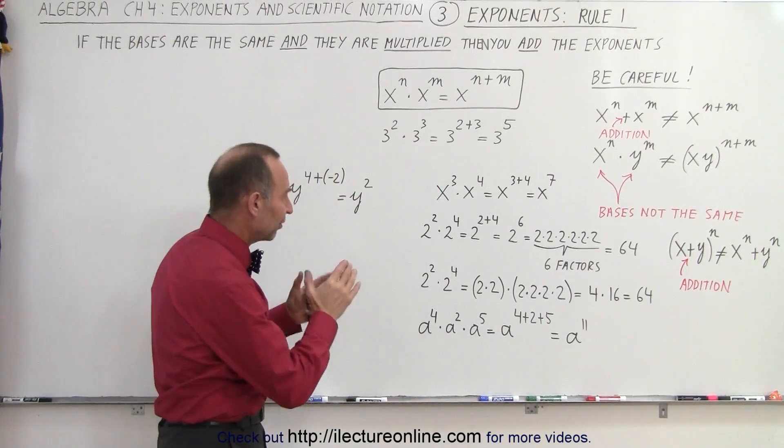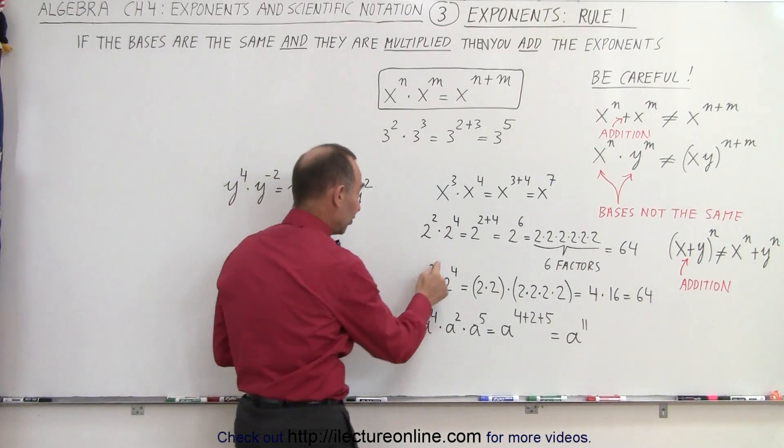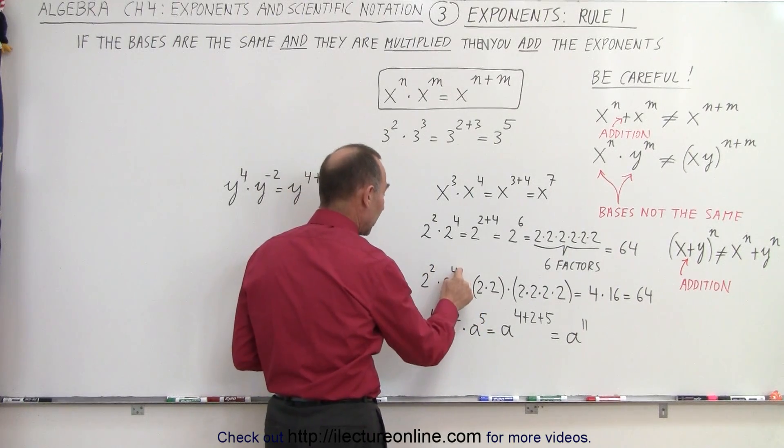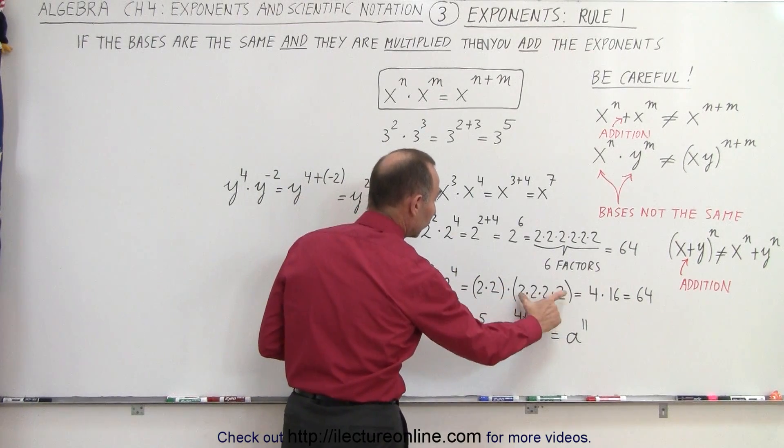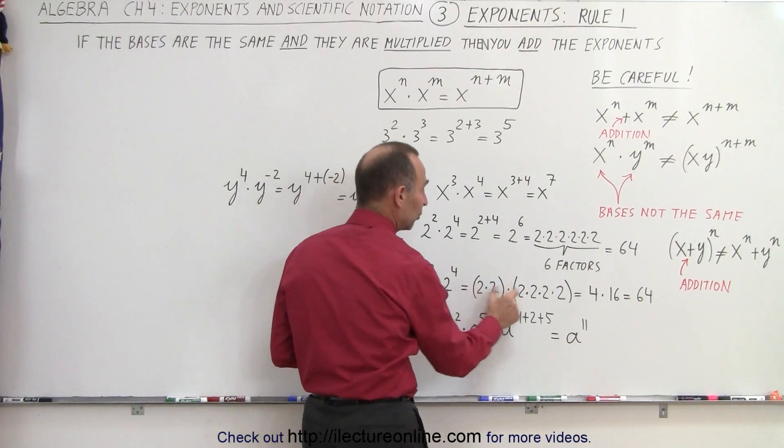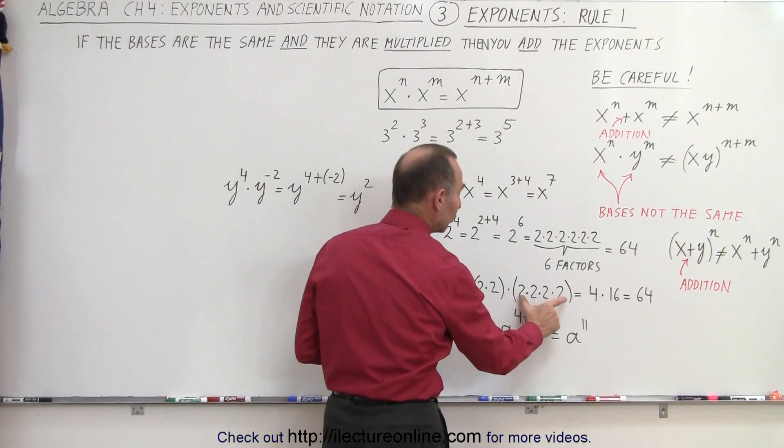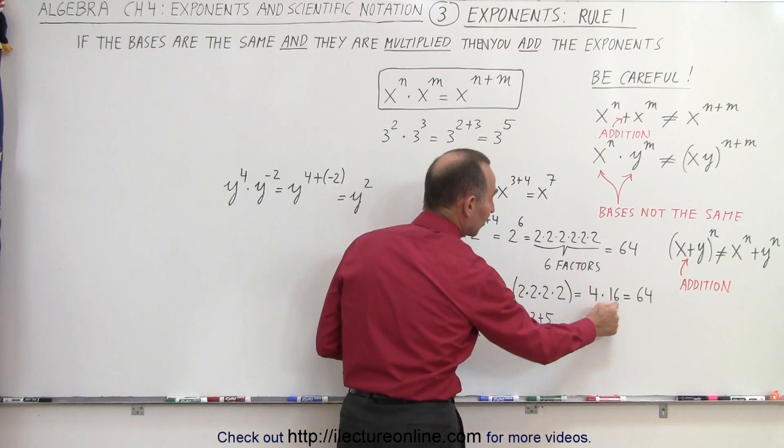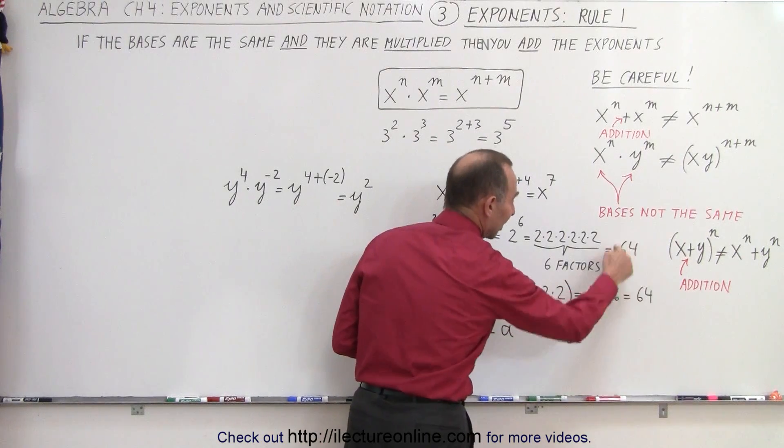Another way of looking at that very same problem is you can say, well, two to the second power, that's two times two. And two to the fourth power, that's two times two times two times two. Four factors, so that's two times two, which is four, times two times two times two, which is 16. Four times 16 is 64. You get the very same result.